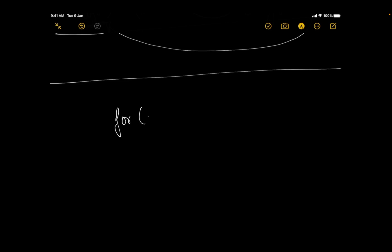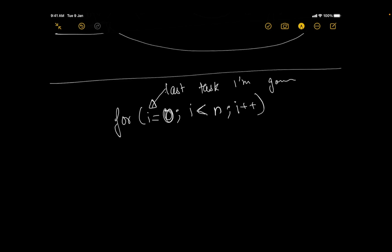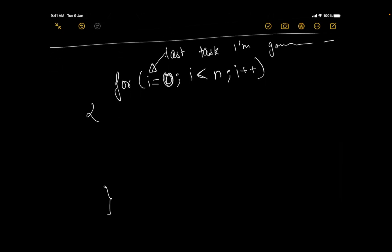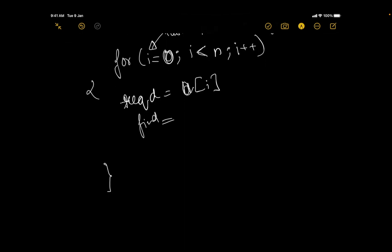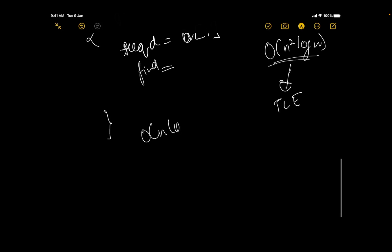Now the actual problem says the last task's rest time is excluded. My approach is to iterate over each task i as the potential last task (from 0 to n-1). However, if I rebuild the prefix vector each time excluding that task, it costs O(n log n) per iteration — making the total O(n² log n), which causes TLE. We need to stay within O(n log n) overall.